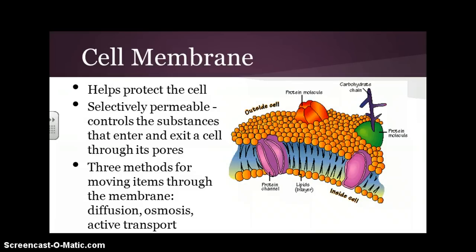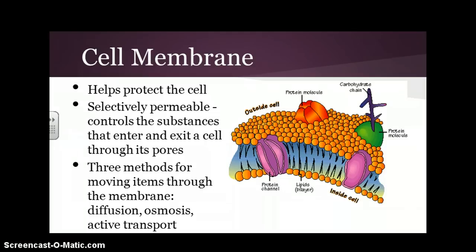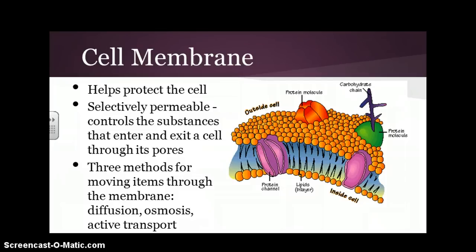Animal cells do have a cell membrane. This cell membrane helps to protect the cell. It's selectively permeable, meaning it controls the things that go inside and outside of the cell through its pores. There are three methods by which things move in and out through the cell membrane: diffusion, osmosis, and active transport.